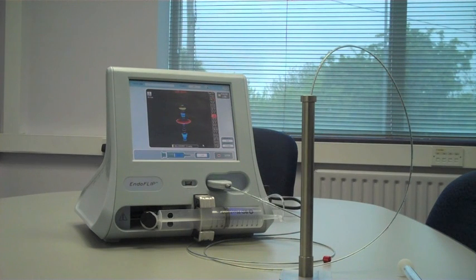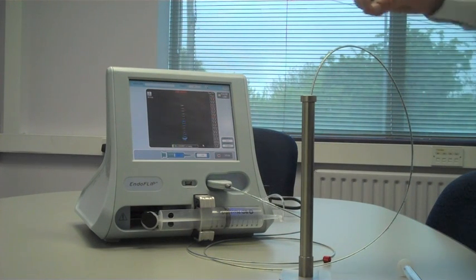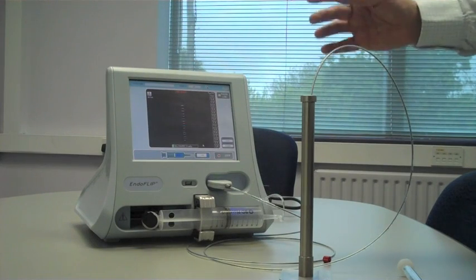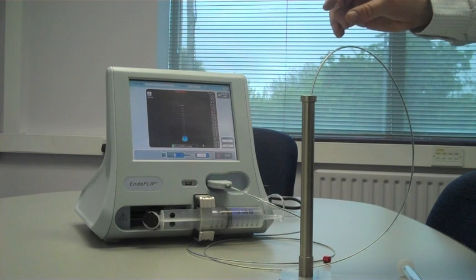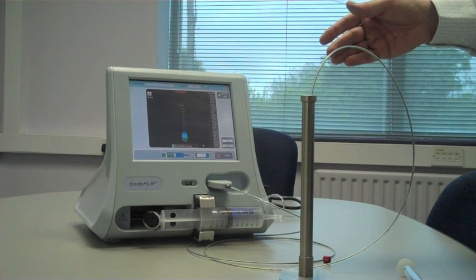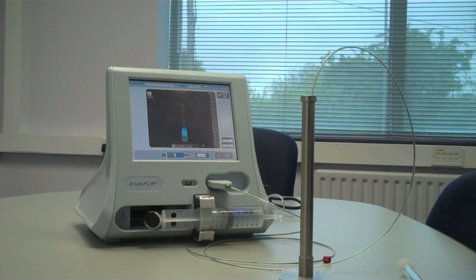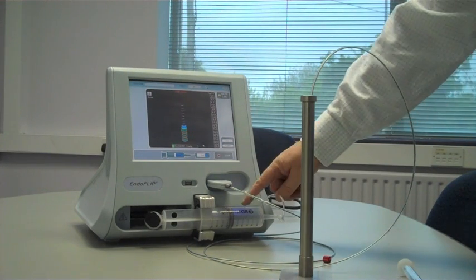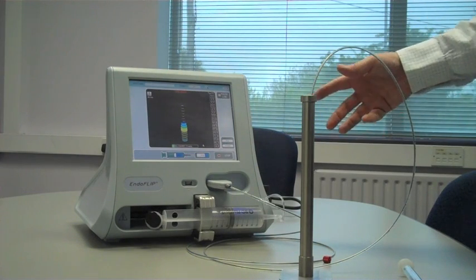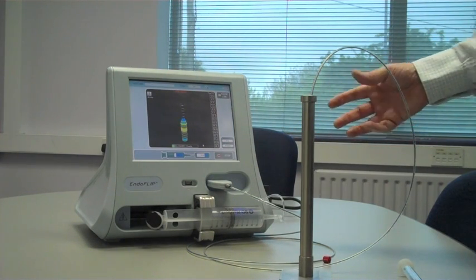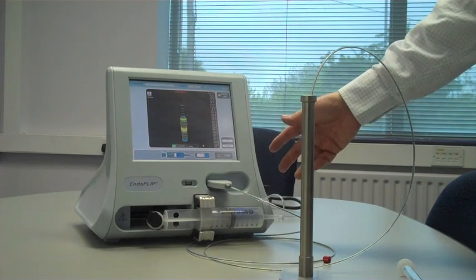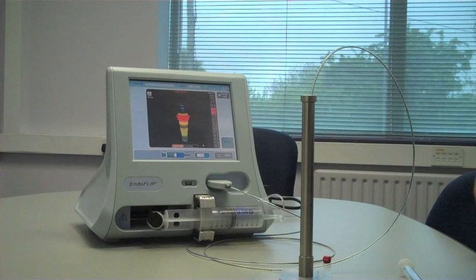So what this is doing is it's filling the catheter line with saline, and essentially displacing the air in the catheter with saline, so the balloon is always filled with saline. This is a diluted saline solution here. This is not the standard saline within the hospital, and you should never just put standard saline in there.